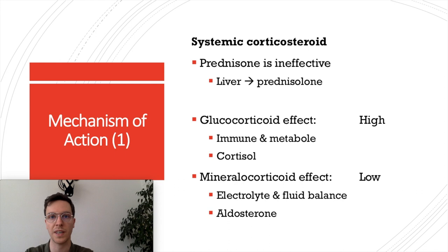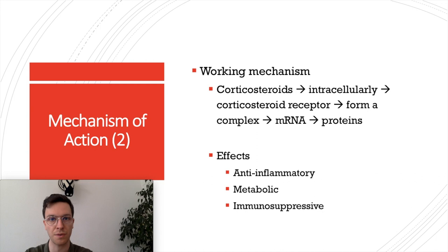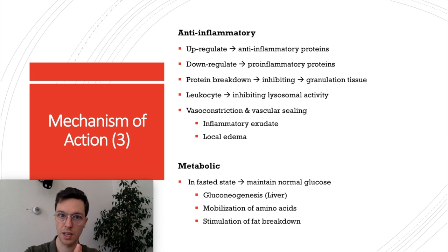In prednisone, the glucocorticoid effects are high but it has very little mineralocorticoid effects — important to note. When you take prednisone, it's absorbed, brought to the liver, metabolized to active prednisolone, enters cells intracellularly, and binds to corticosteroid receptors. This forms a cascade of complexes leading to the production of messenger RNA, which leads to the production of several proteins. These proteins have three effects: anti-inflammatory, metabolic, and immune suppressant.